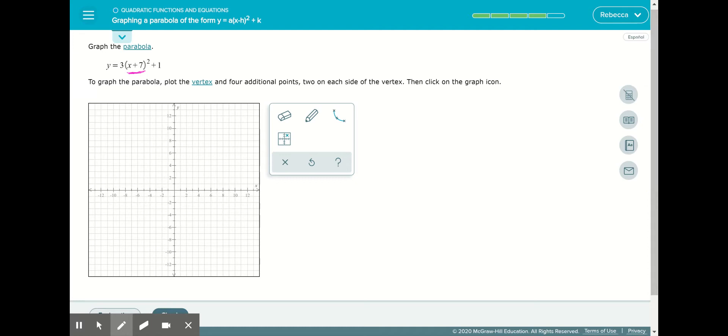I'm going to take x plus 7, set it equal to x minus h. Since we're finding h, we remove the x's, and now we have 7 equals the opposite of h. The value inside of here is always opposite. So it looks like positive 7, but it's actually negative 7. So now my vertex is at negative 7 and 1.